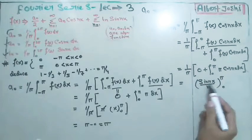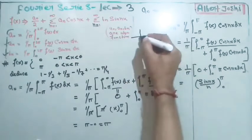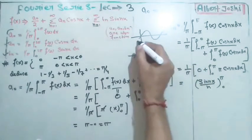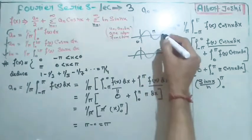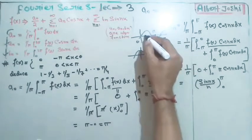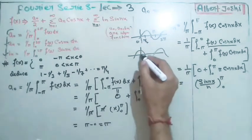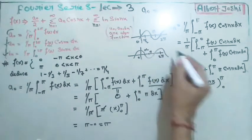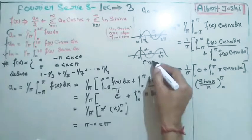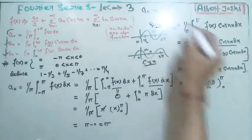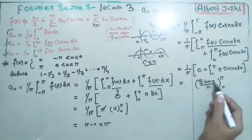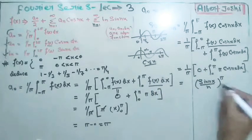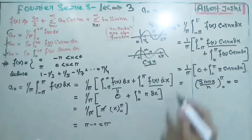The integral of cos(nx) is sin(nx)/n, evaluated from 0 to π. Note that sin(nπ) = 0 for all integer n (since sin(π) = 0, sin(2π) = 0, etc.) and sin(0) = 0. Therefore the result is 0, giving aₙ = 0.